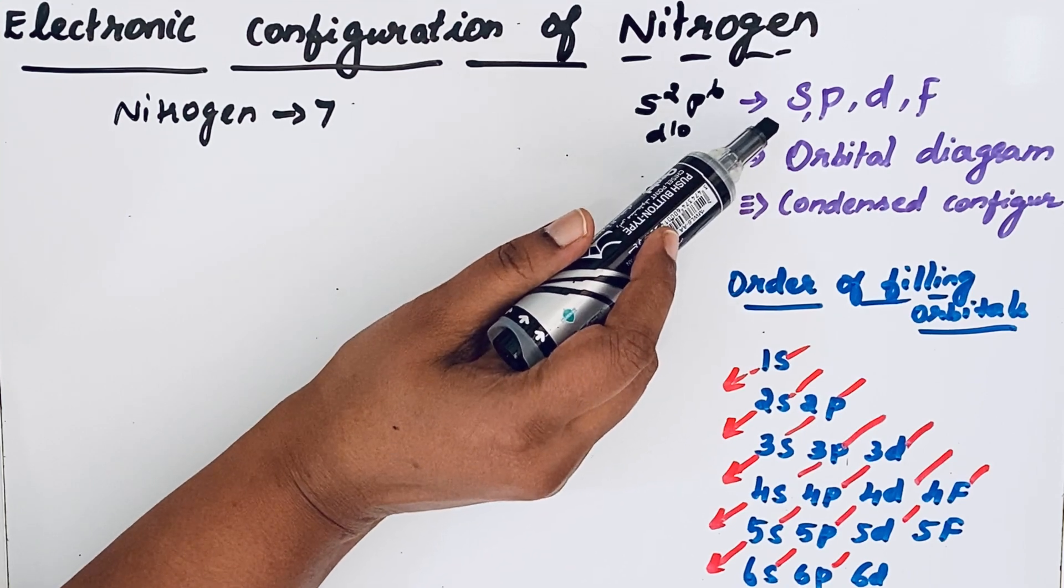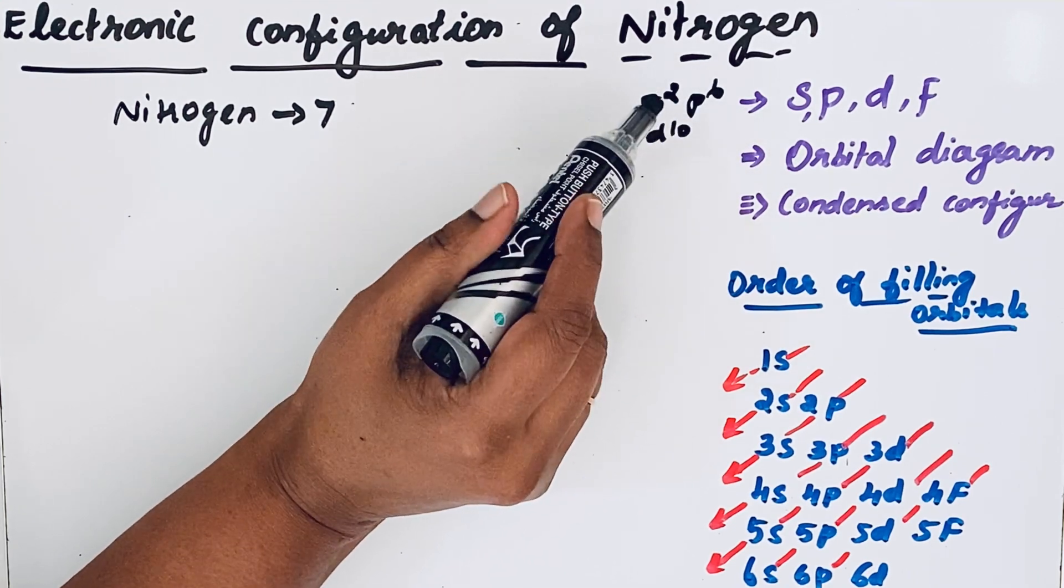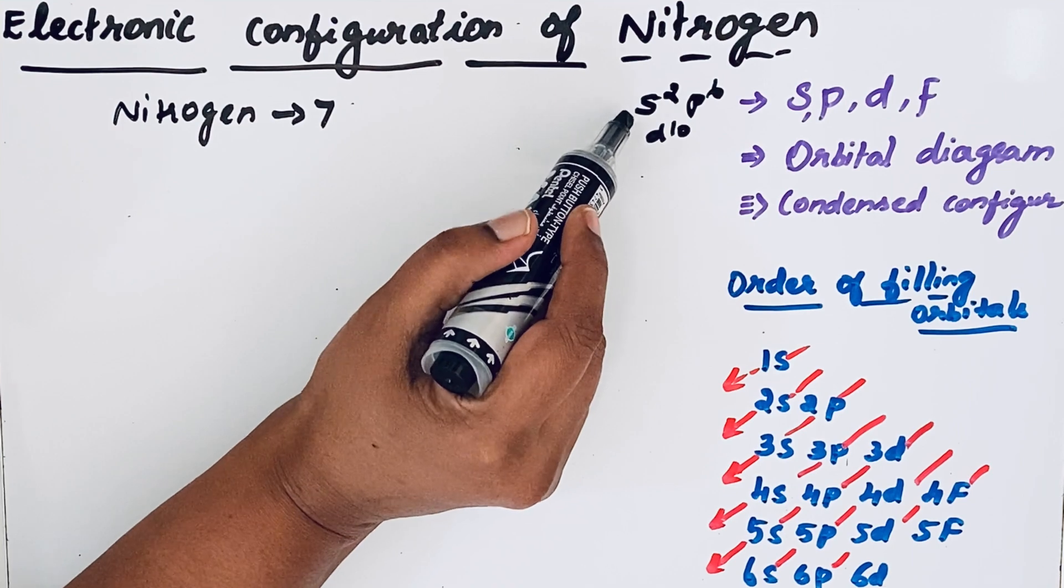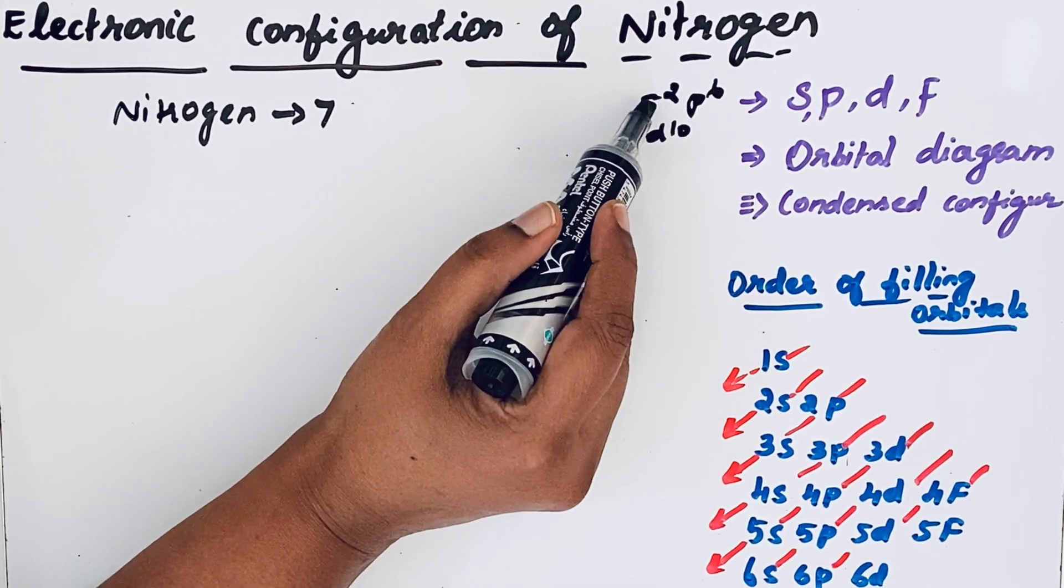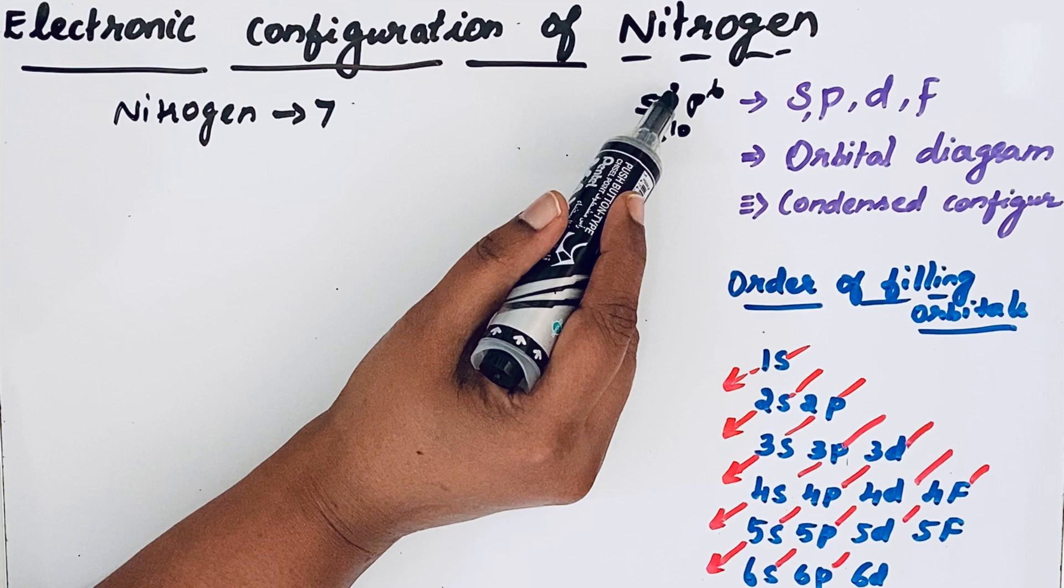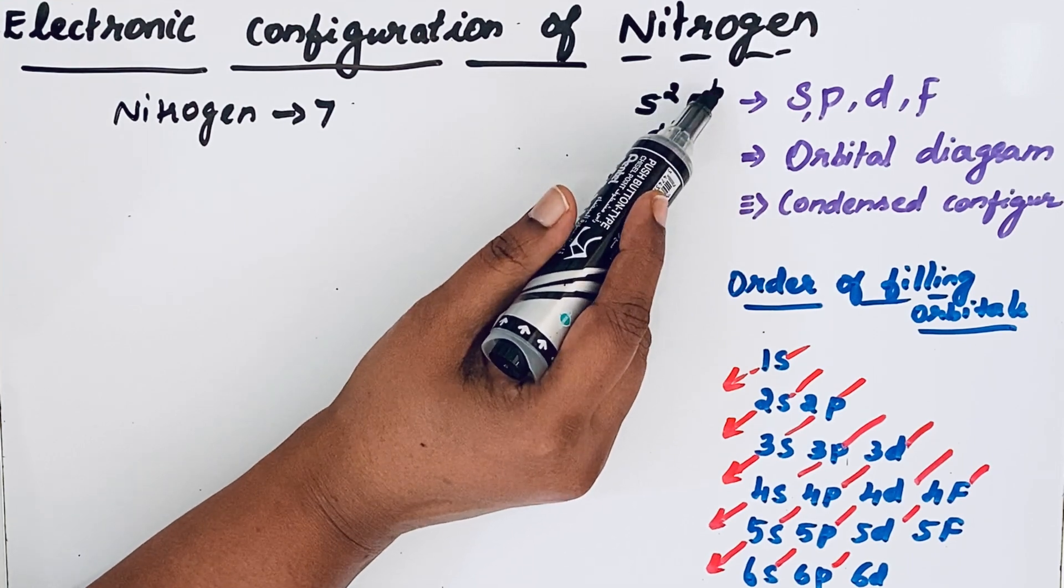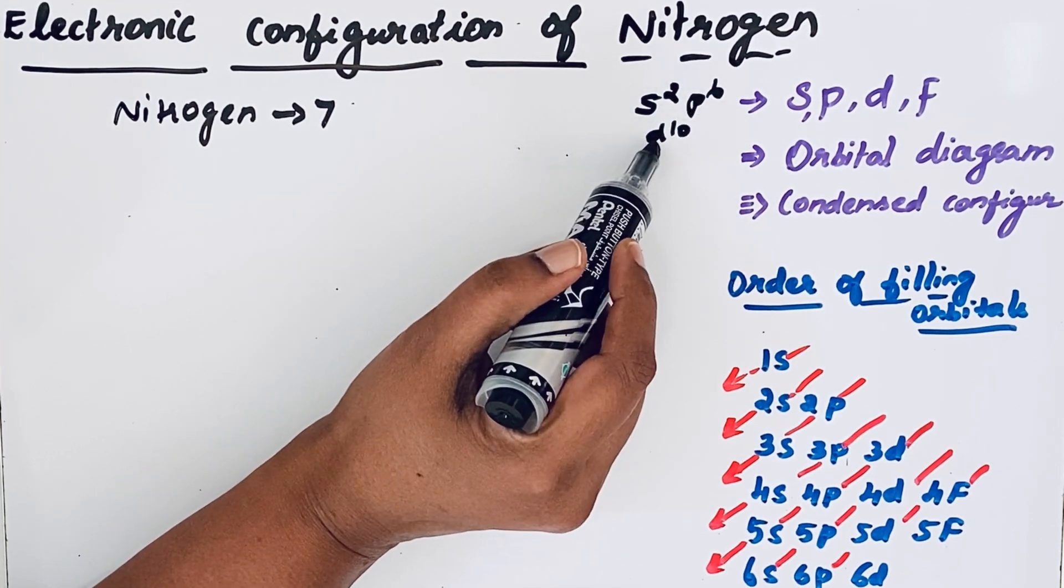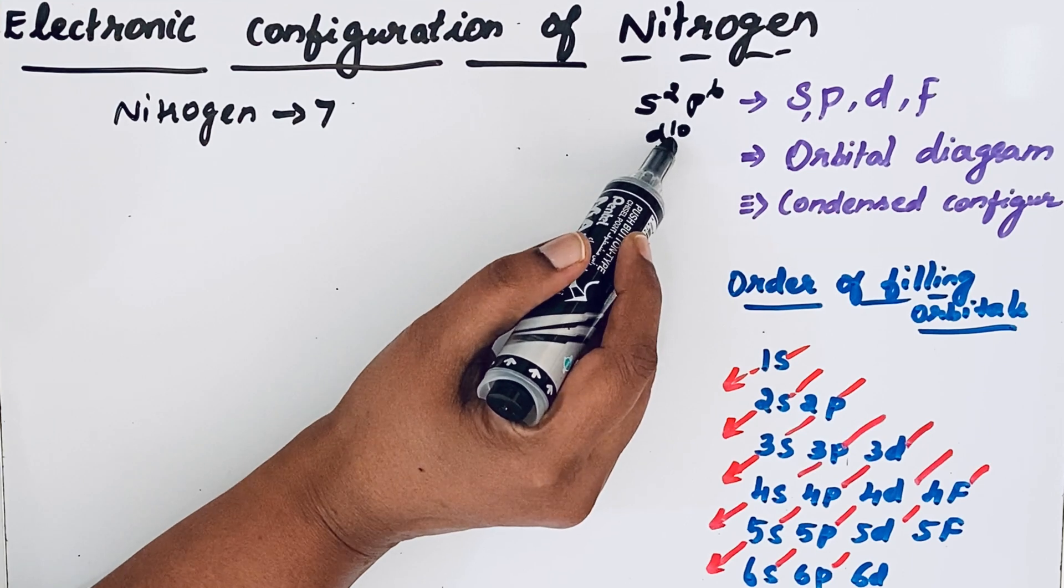In SPDF notation the electrons are represented as a superscript. For example, s orbital can occupy two electrons so s2. In p maximum number of electrons is 6. In d maximum number of electrons is 10.